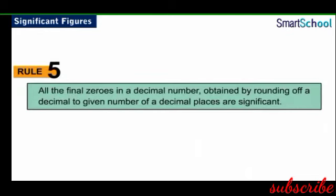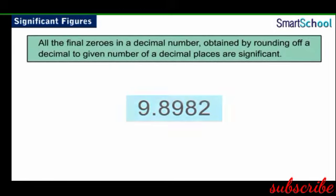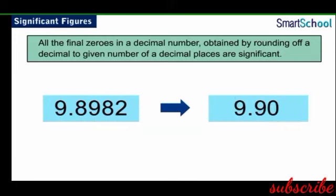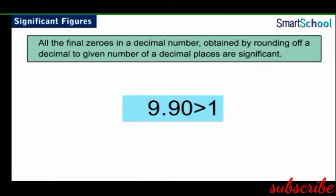The fifth rule says that all the final zeros in a decimal number obtained by rounding off to a given number of decimal places are significant. For example, the number 9.8982 has five significant figures. Rounding it off to two decimal places gives 9.90, which contains a final zero. Since this number is greater than 1, the zero is also a significant figure, and the number of significant figures in 9.90 is 3.